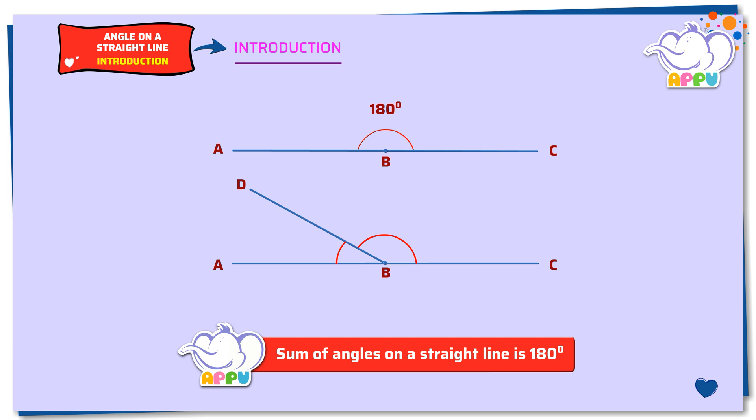Since the sum of angles on a straight line is always equal to 180 degrees, angle ABD plus angle DBC equals 180 degrees.